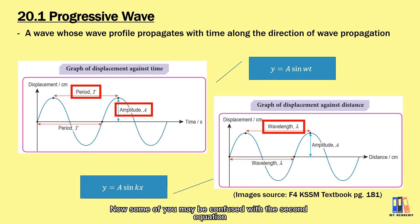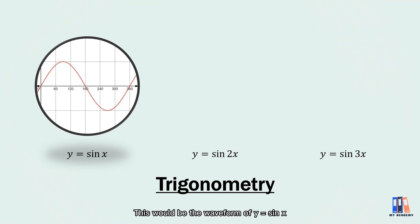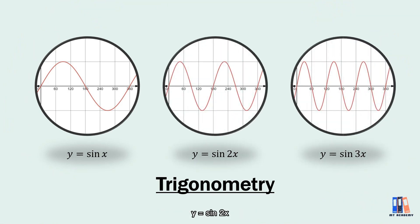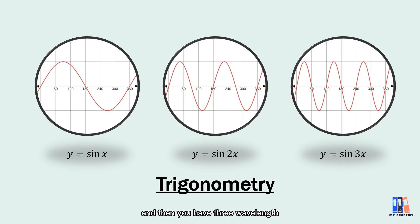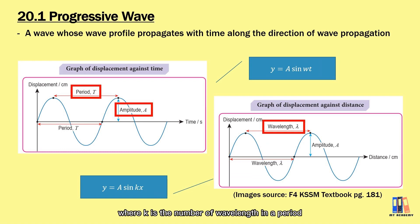Some of you may be confused with the second equation. Recall the trigonometry graphs you've learned. This is the waveform of sin(x). If you have y = sin(2x), you get two wavelengths in one period of oscillation, and y = sin(3x) gives three, and so on. So the second graph is represented by y = a sin(kx), where k is the number of wavelengths in a period, also known as the wave number.